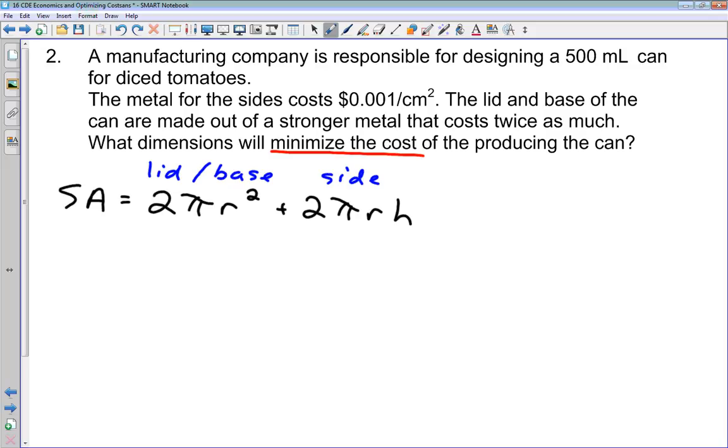We're given some other information in the question. We're told that the can is going to be 500 milliliters, and we know from science that 500 milliliters is the same as 500 centimeters cubed. So they're telling us what the volume of our can has to be. The other formula that we're going to need is the relationship for the volume of our cylinder. Our volume is πr²h. These are the two formulas that we're going to have to work with.